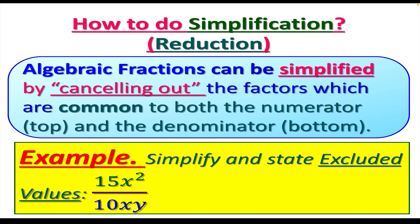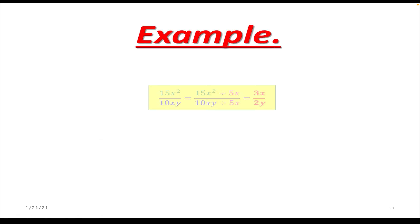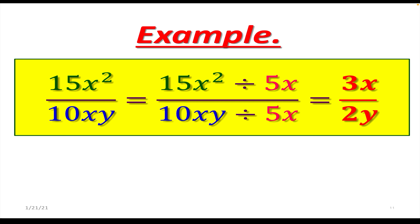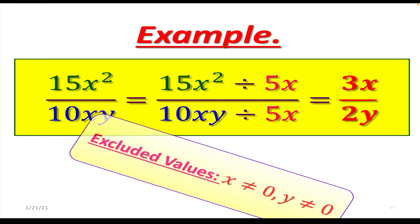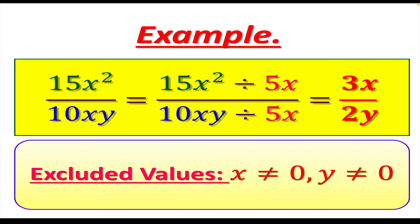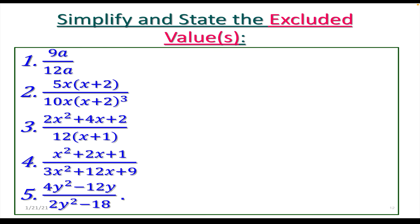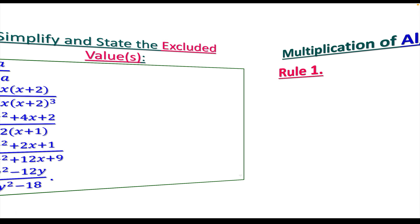Say we have 15x² over 10xy, and we need to simplify and state the excluded values. The numerical coefficients 15 and 10 have a highest common factor of 5, and x appears on top and bottom. So we divide top and bottom by 5x, giving 3x over 2y. The excluded values are x ≠ 0 and y ≠ 0.